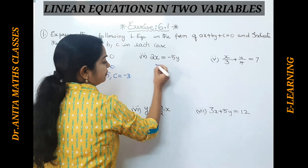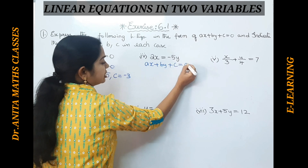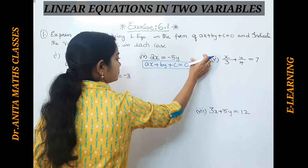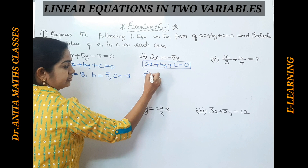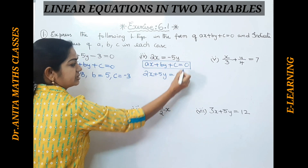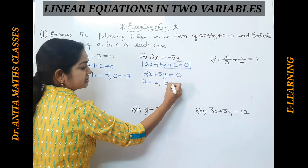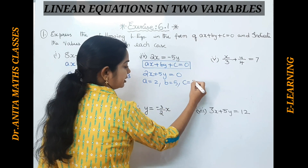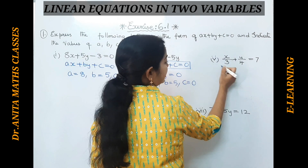For the next problem, we bring it into the general form ax + by + c = 0. Bringing the y term to this side, it becomes +5y = 0. Now it is in the required form. The value of a = 2, the value of b = 5. We don't have a c value here, so c = 0.